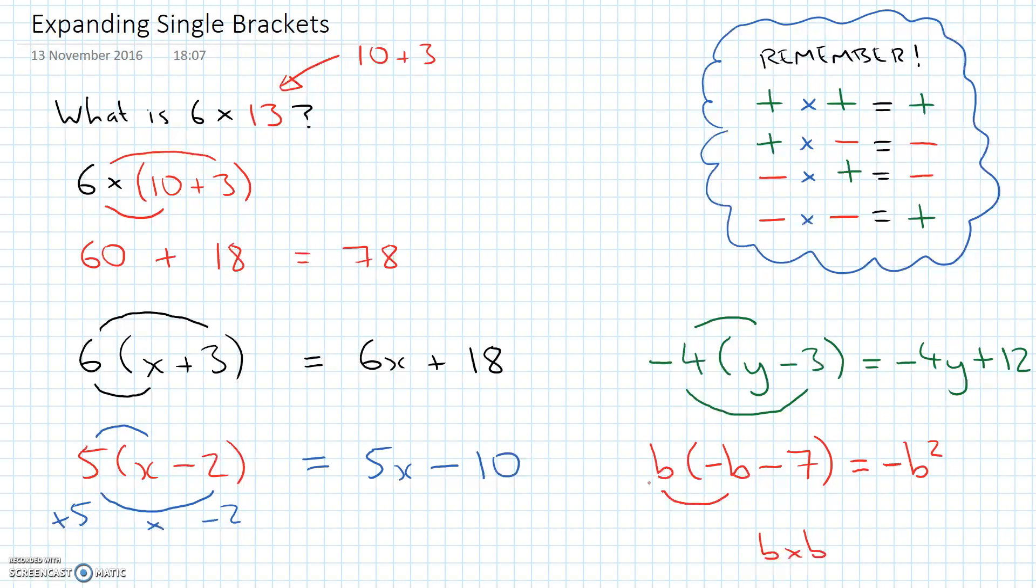We've then got to do positive b times negative 7. Well, positive times a negative is going to give me a negative. And b times 7. What's b times 7? Well, it's the same as 7 times b. And we can just write that as 7b. So this expression expanded will give me negative b squared minus 7b.